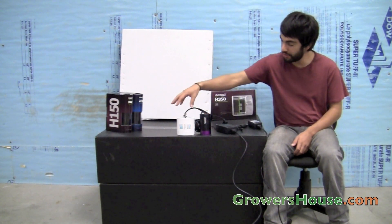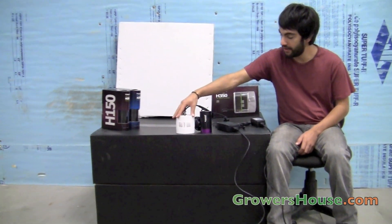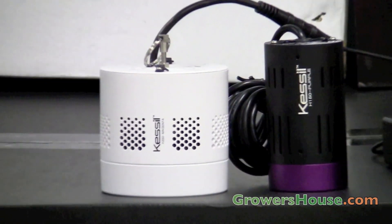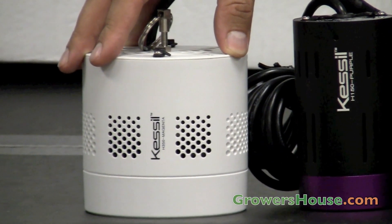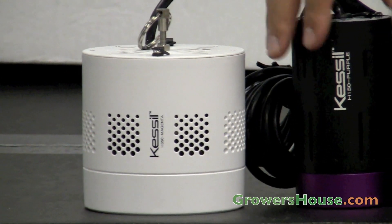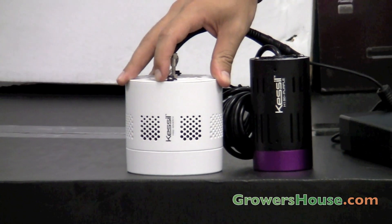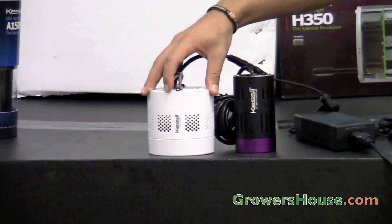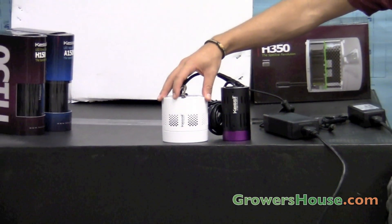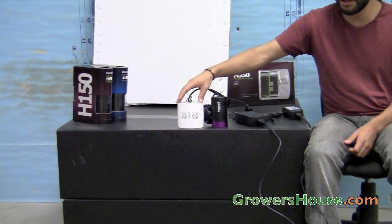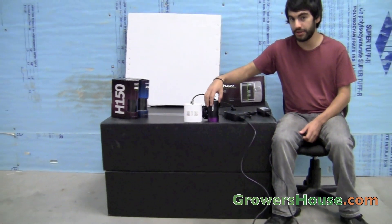Now moving over to the 350, this is Kessil's new unit. And this one is 2.5 times more intense than the 150 watt unit. And this one draws actually 90 watts of power. And now this unit also has a dense matrix array, and also has the same beam angle as the 150, which is 60 degrees.